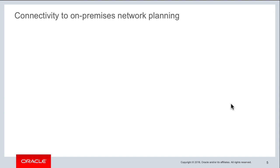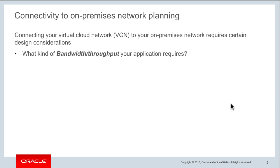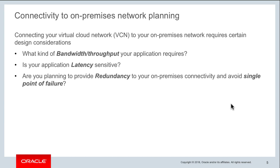Now let's talk about considerations when designing your networking infrastructure. First, ask yourself what kind of bandwidth or throughput your application requires — this helps decide whether to choose a VPN connection or a dedicated private FastConnect connection. Second, does latency matter? Are you okay with variable latency throughout the day, or does your application require a specific latency?